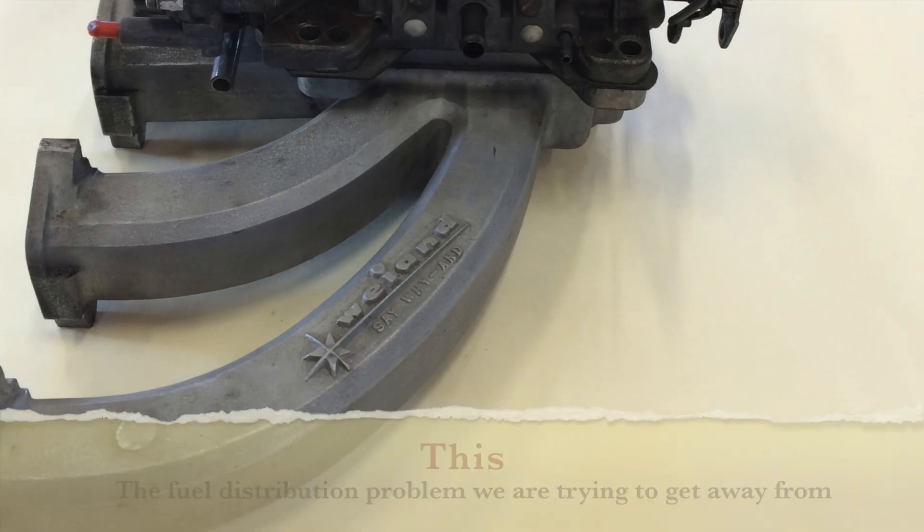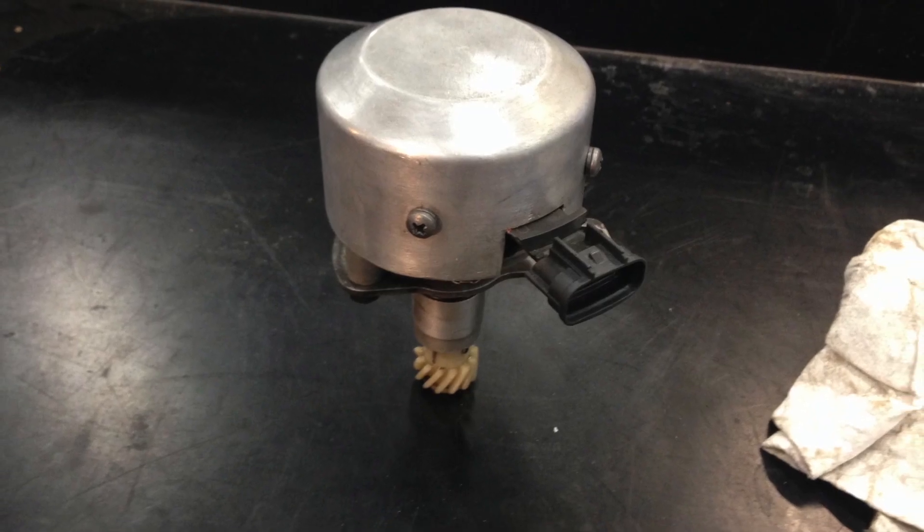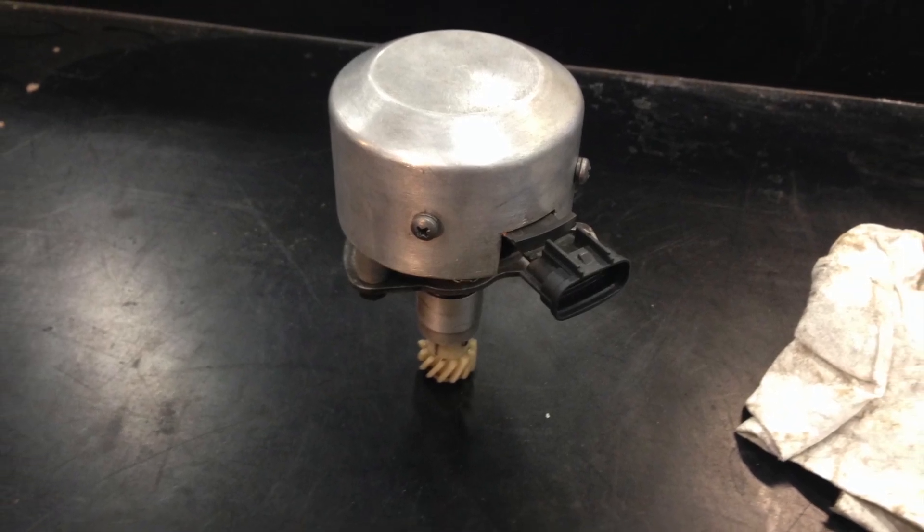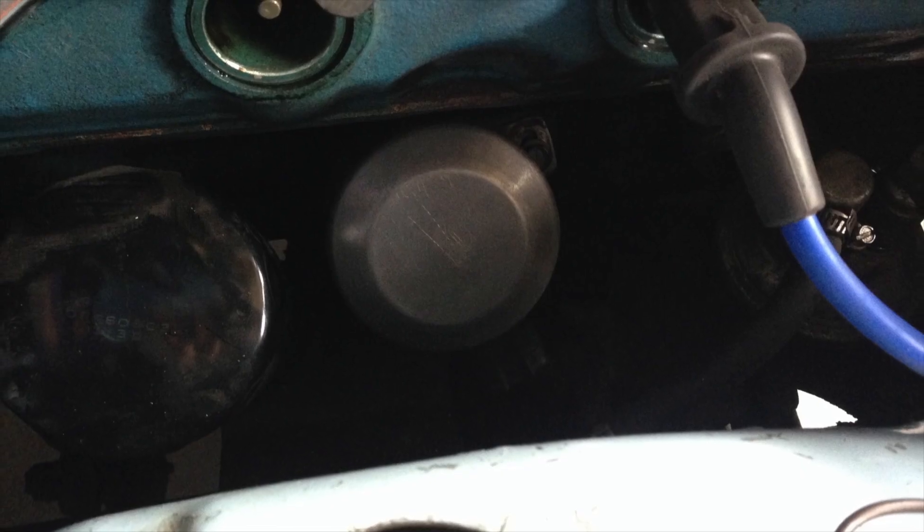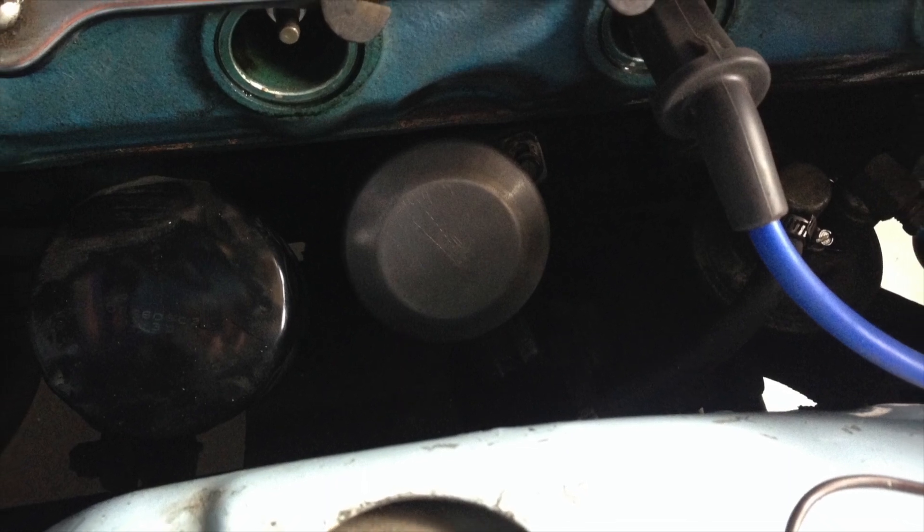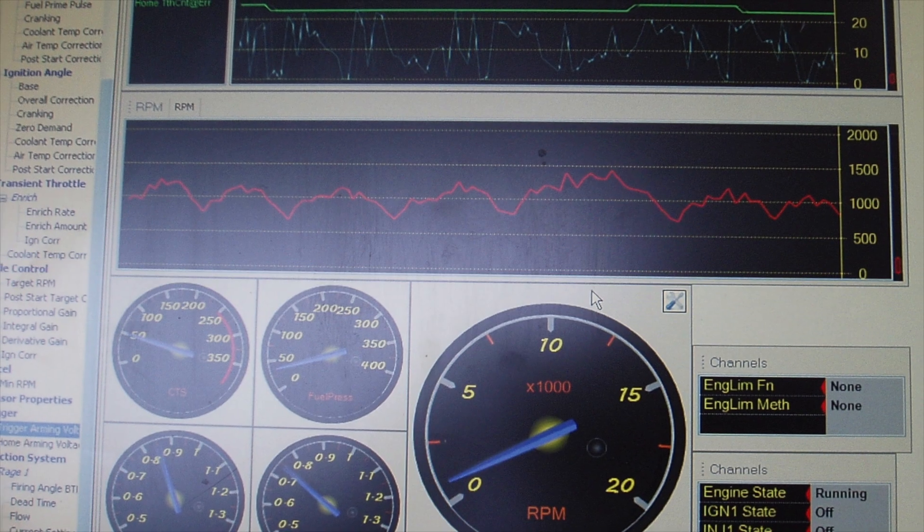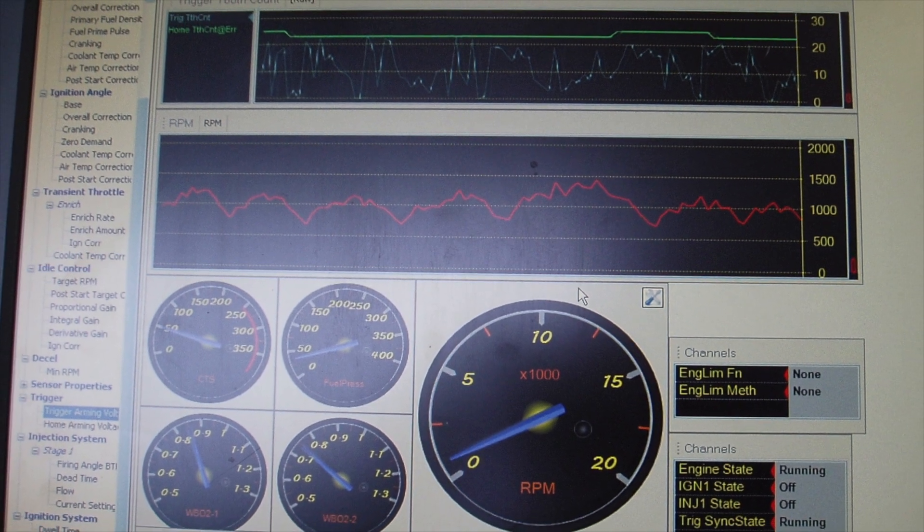Initially, I tried using a Toyota cam sensor, which fit very nicely into the stock distributor housing. This gave me an equivalent of 12 teeth per revolution. Unfortunately, it was an analog signal, so I had to depend on the ECU to do the triggering.